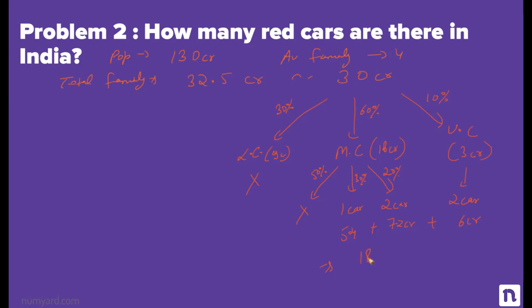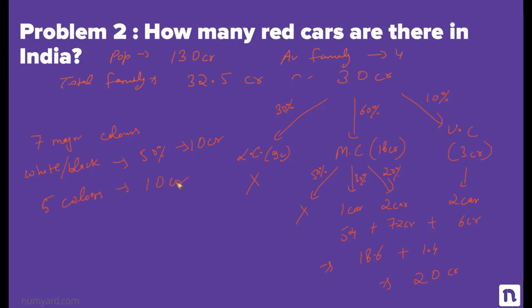Adding approximately 1.4 crore cars from Ola, Uber, and rental services, the total number of cars in India is 20 crores. Now, in India there are seven major colors for cars. White and black are the most popular, so let's assume these two colors comprise 50% of the market — that is 10 crore cars. The remaining 10 crores are split across five colors. Red is one of those five, so red cars = 10 ÷ 5 = 2 crore cars. So in India, there are approximately 2 crore red cars.